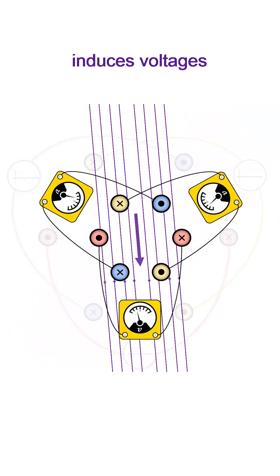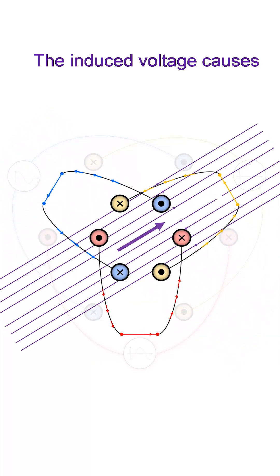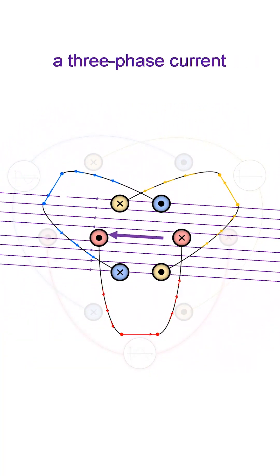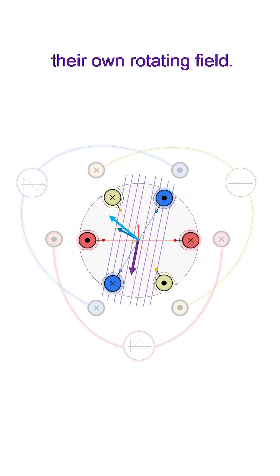The stator magnetic field induces voltages in the rotor coils. The induced voltage causes a three phase current through the rotor coils. These rotor currents set up their own rotating field.